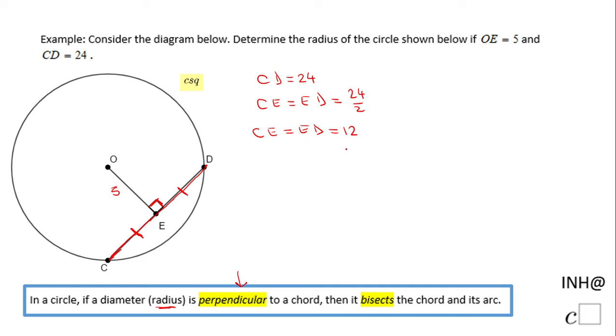So now how am I going to use this fact to find the radius? I can draw any of these two radii, either OD or OC. I'm going to go with OD. If you notice now we have a right triangle and this leg is 5, it's OE.